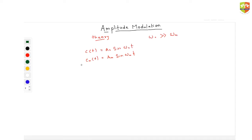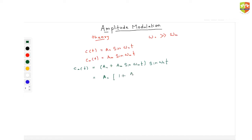Now the way we theoretically do amplitude modulation is like this. The modulated signal is: (A_c + A_m sine of omega_m t) multiplied by sine of omega_c t. If we take A_c common, we get: A_c times (1 + (A_m / A_c) sine of omega_m t) multiplied by sine of omega_c t.